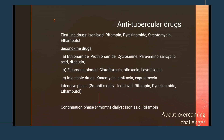Tuberculosis treatment involves two phases. The first is the intensive phase, lasting two months, during which the patient takes isoniazid, rifampin, pyrazinamide, and ethambutol daily. This is followed by the continuation phase, lasting four months, during which the patient takes isoniazid and rifampin daily. So the standard TB treatment is two months intensive phase followed by four months continuation phase.